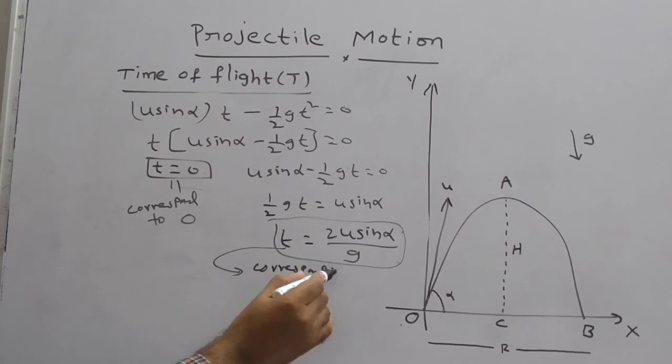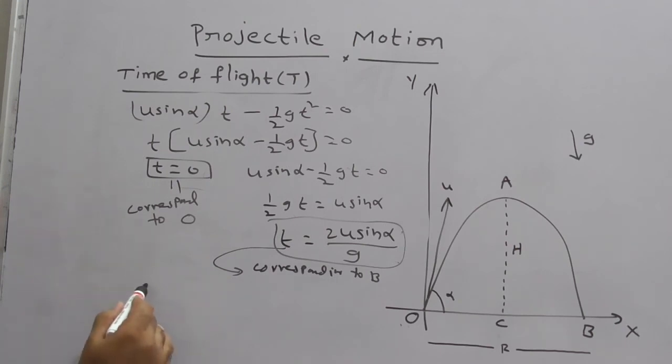This t represents corresponding to B. Therefore, so how to write this? It can be represented by capital T. T is equal to T_OAB, that is along path OAB. It is nothing but 2u sin alpha by g.